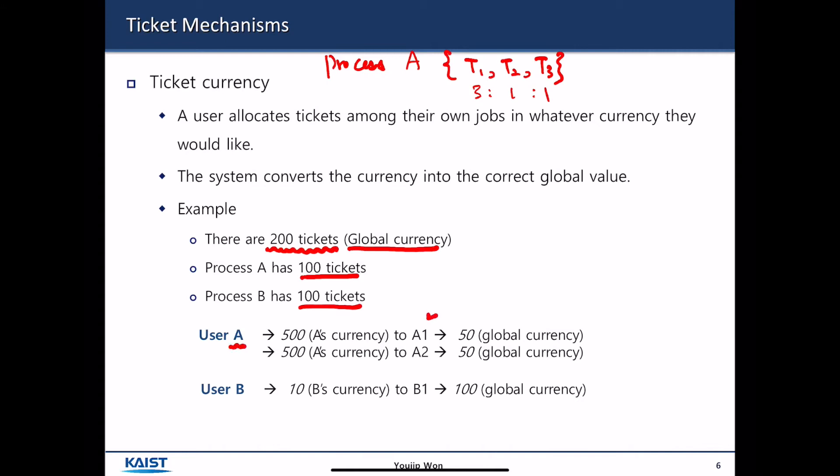And an operating system or a user A or process A wants to divide its own share of CPU cycles to its threads in half and half.